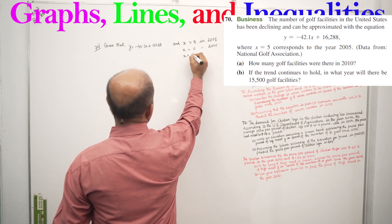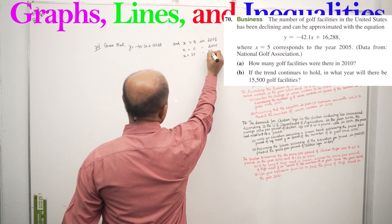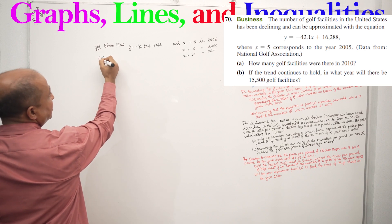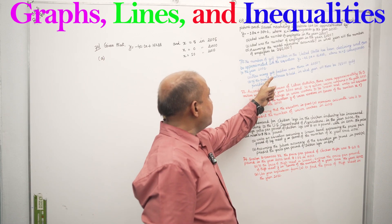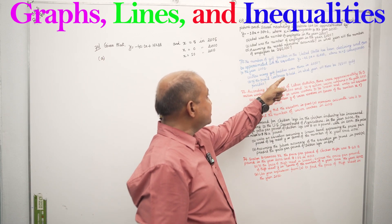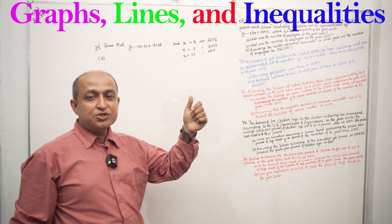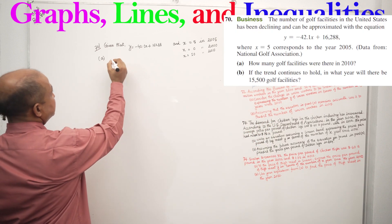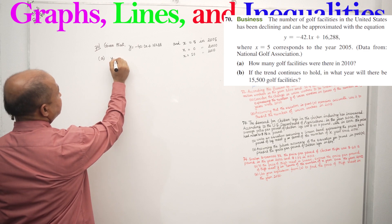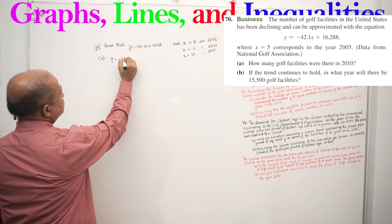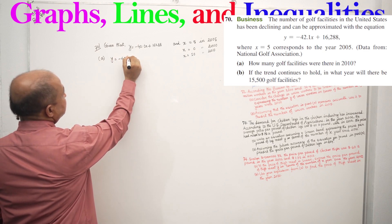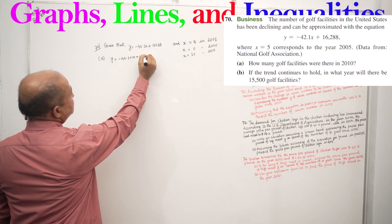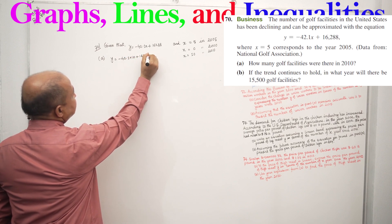X equals 10 in 2010. Requirement A asks: how many golf facilities were there in 2010? In 2010, X equals 10. We substitute: Y equals minus 42.1 times 10 plus 16288.